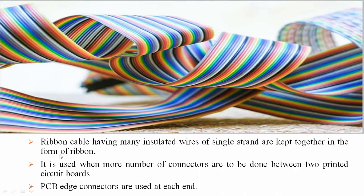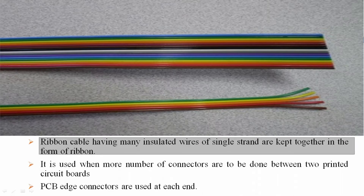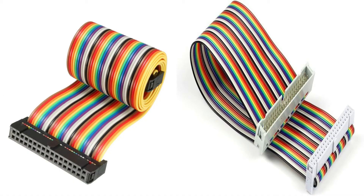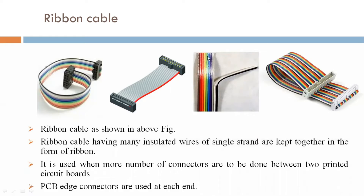Ribbon Cable has many insulated wires of single strand kept together in the form of a Ribbon. In this, a single strand of insulated wire is used in the form of a Ribbon.